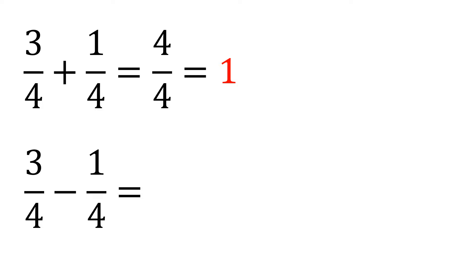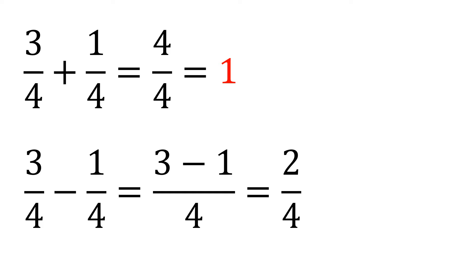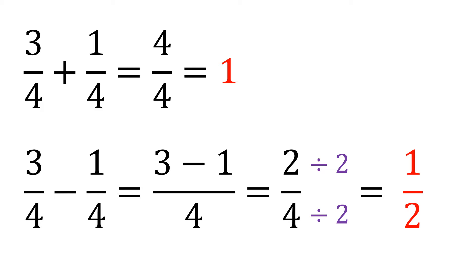For subtraction, it's the same thing — if the denominator is the same, we just copy it, which is four, and then subtract the top: three minus one is two, giving us two-fourths. Always reduce to simplest form: since two and four are both divisible by two, we get one-half. Since one and two have no more common divisor, that is the final answer.